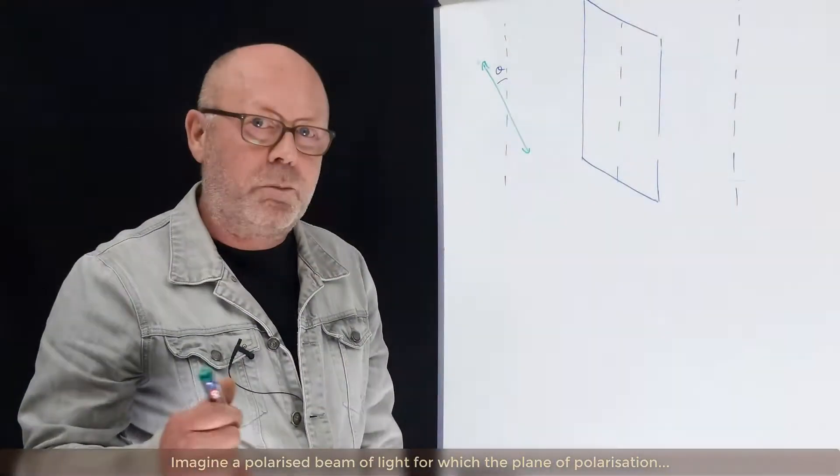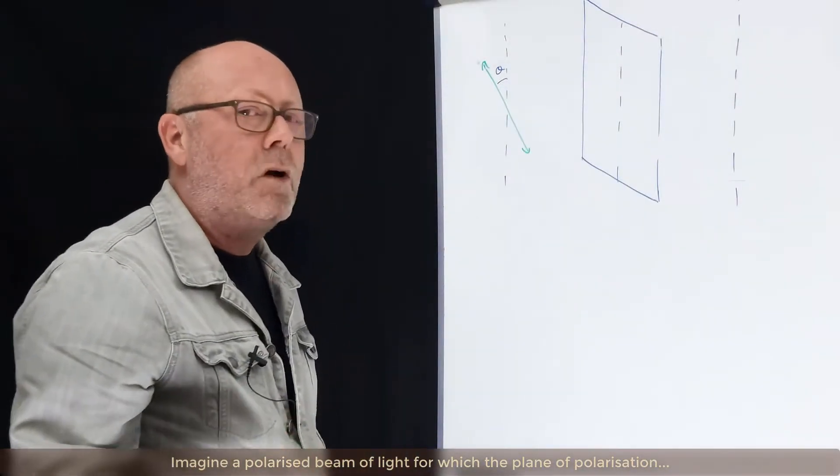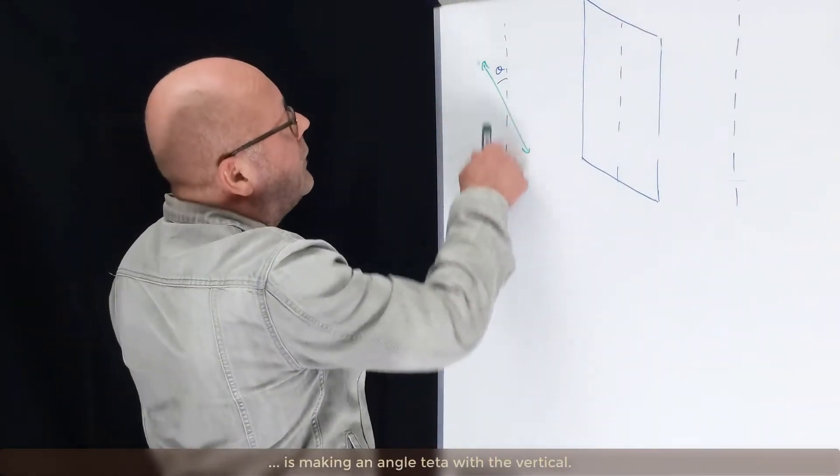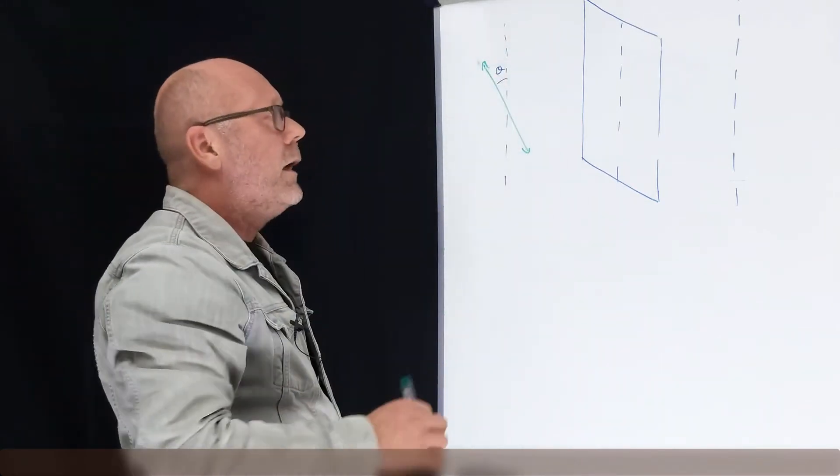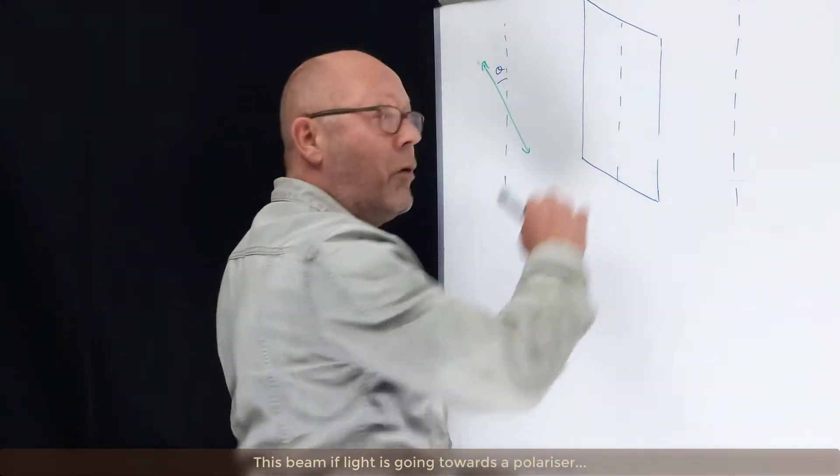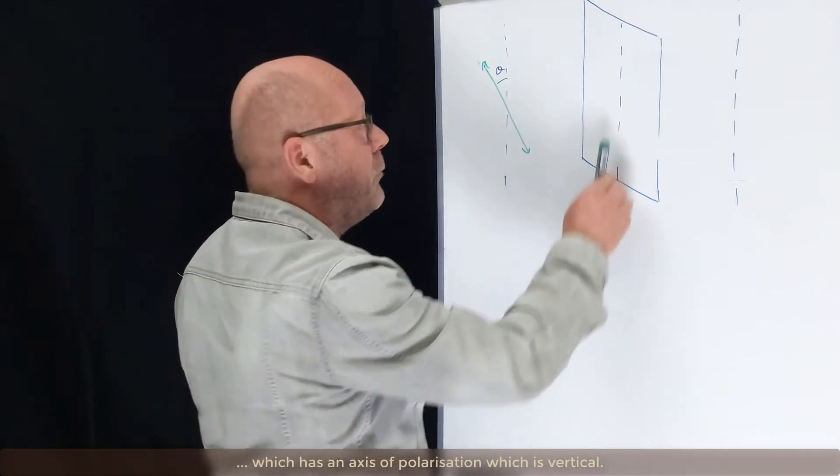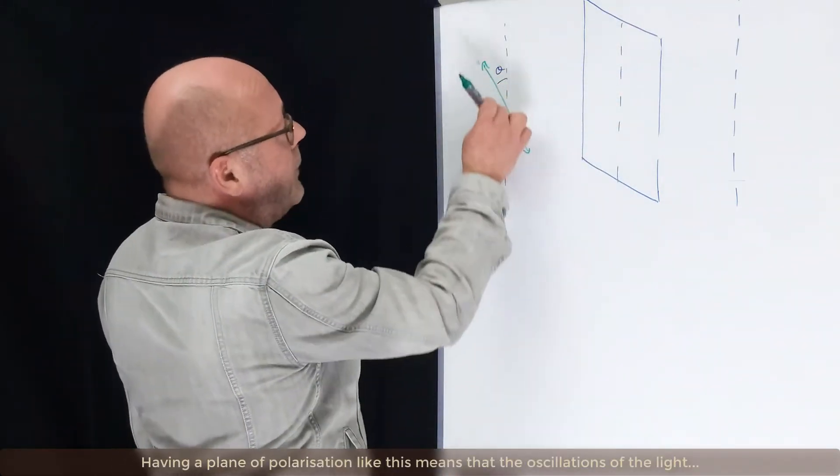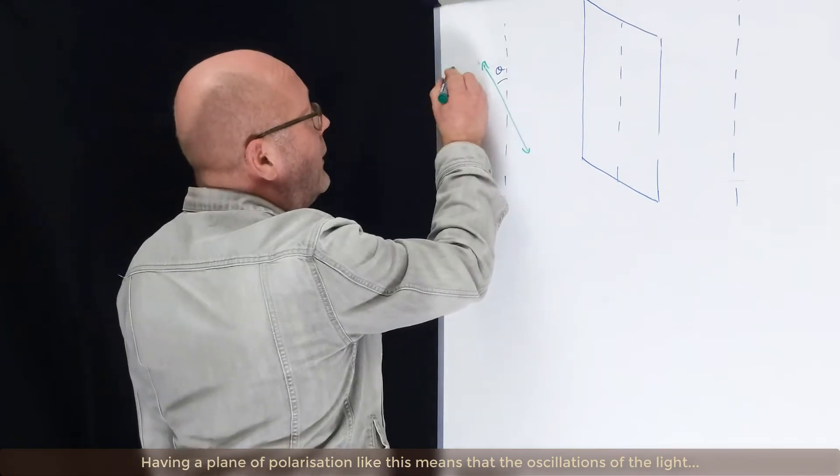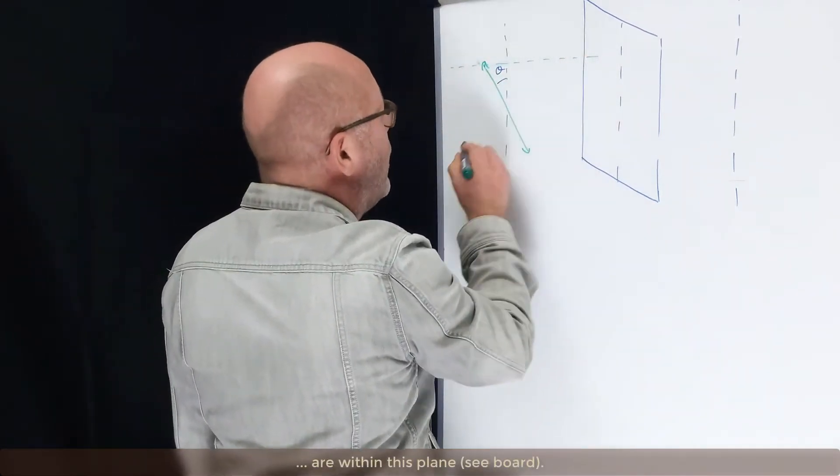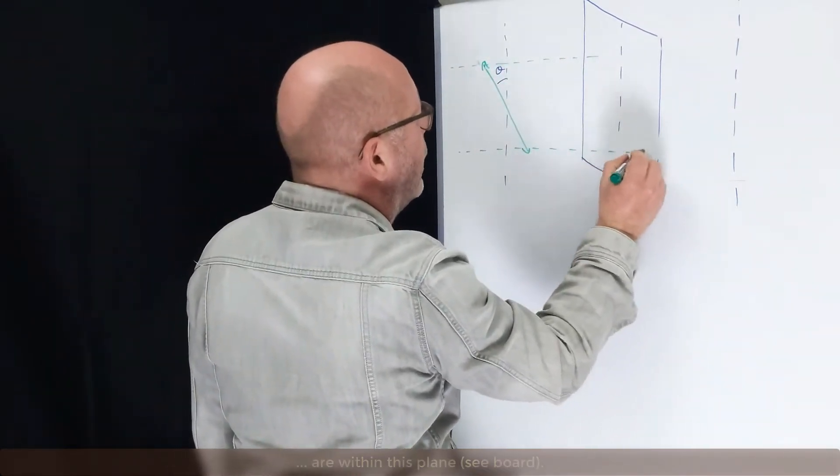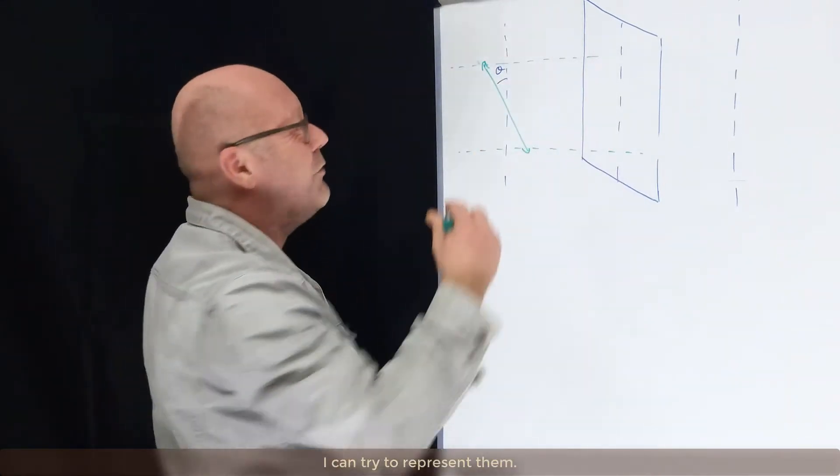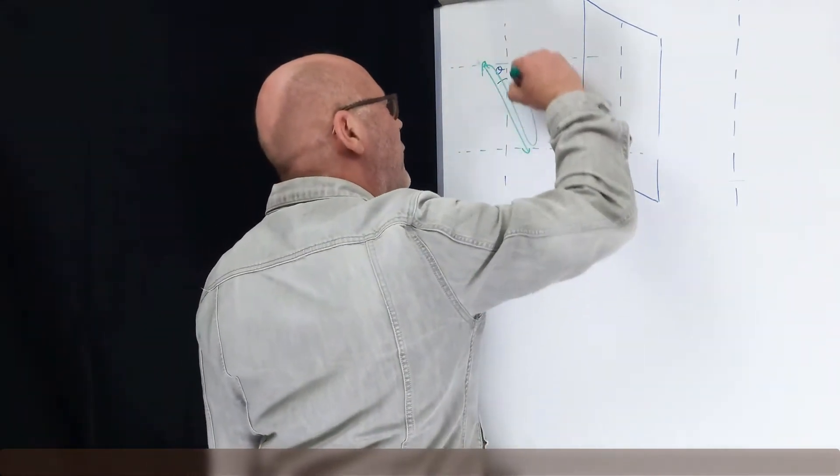Imagine a polarized beam of light for which the plane of polarization is making an angle theta with a vertical. This beam of light is going towards a polarizer which has an axis of polarization which is vertical. Having a plane of polarization like this means that the oscillations of the light are within this plane. I could try to represent them, kind of like this.